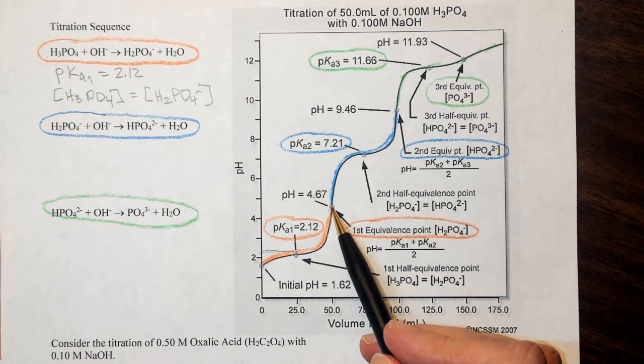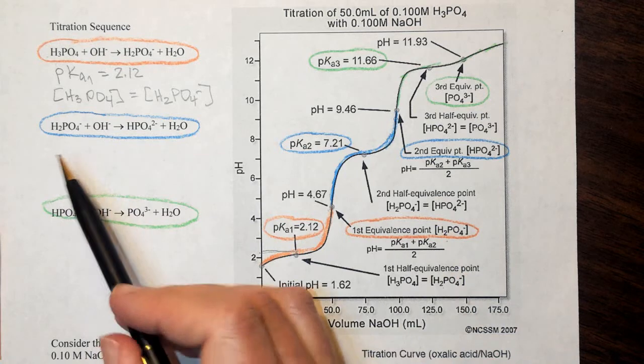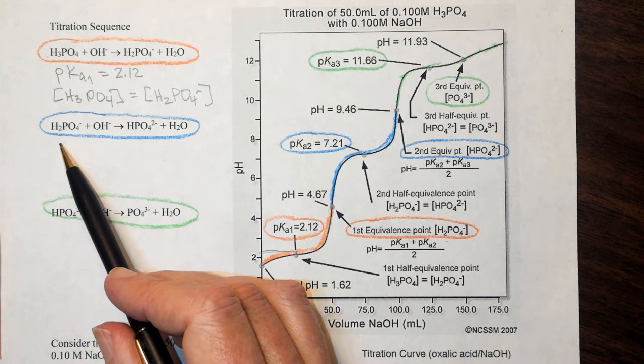Okay, so at our first equivalence point, now all we have present is primarily the H2PO4 minus. We are going to continue adding base, and at this point, we will begin the second step of the reaction.